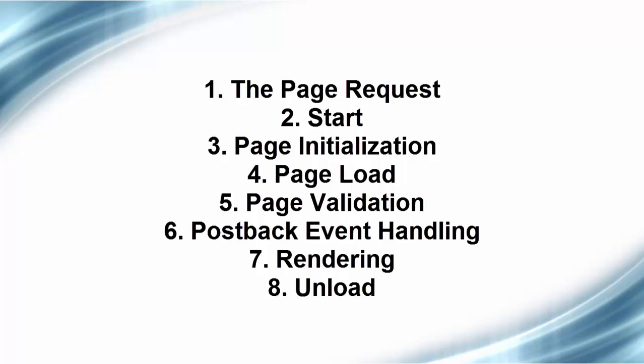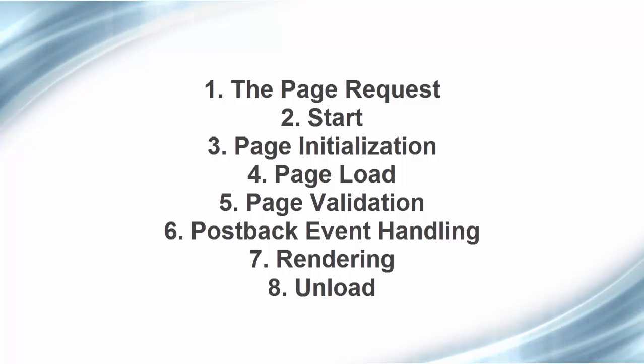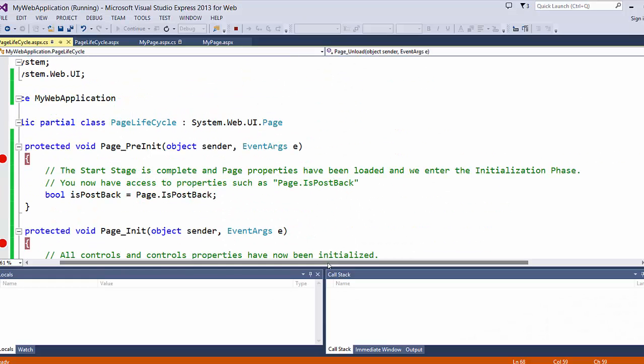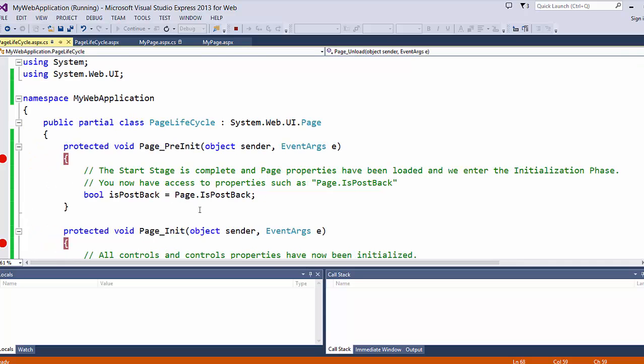In review, there are eight stages in the page lifecycle: page request, start, initialization, load, validation, post back event handling, rendering, and unload. In most of your development you will be concerned with stages four through six: page load, page validation, and post back event handling. The lifecycle event methods available in your code behind, in the order they are called, are: PreInit, Init, InitComplete, PreLoad, page load, button submit click, page load complete, page PreRender, and page unload.